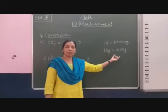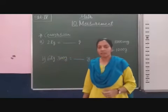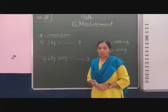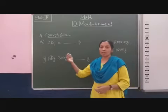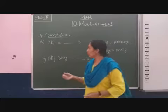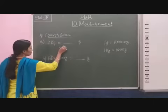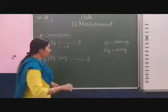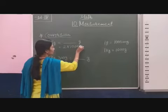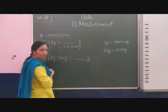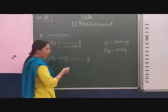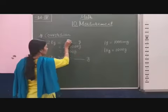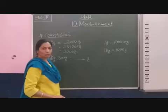And one kilogram is equal to one thousand grams. On that basis, it will be easy to solve this question: two kilograms is equal to how many grams? Here we convert kilograms into grams, so we write two multiplied by one thousand grams. The answer will be two thousand grams.